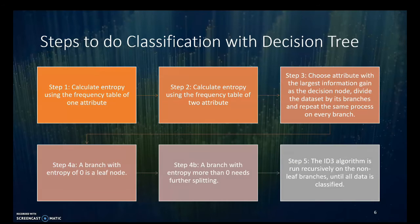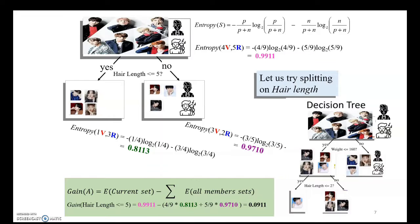These are the steps: we need to calculate the entropy using the frequency table of one and two attributes, and then utilize the information gain before proceeding with the branching and recursively developing the tree.